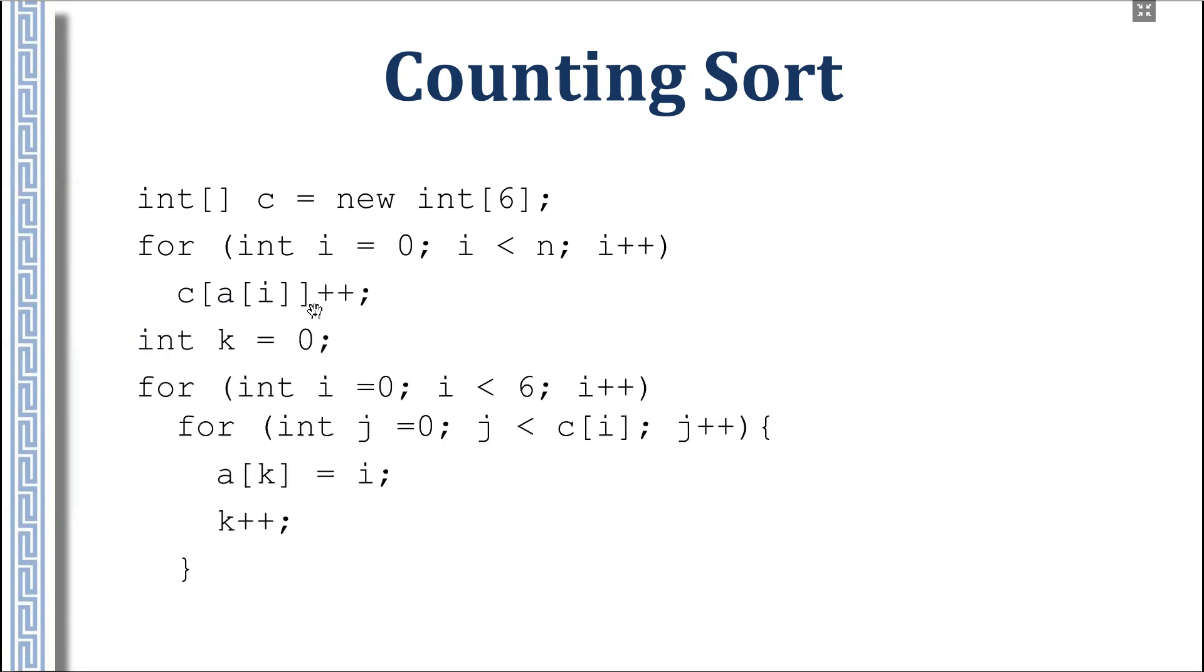After that, we just write required number of zeros, required number of ones, required number of twos, and so on. We increase the numbers that we consider - all numbers from zero to five.